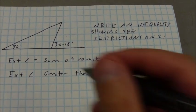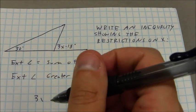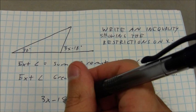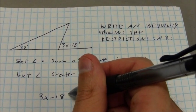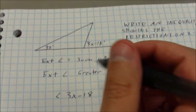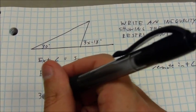So, if I want to write an inequality, I know that the 3x minus 18 has to be greater than the 30 degrees.